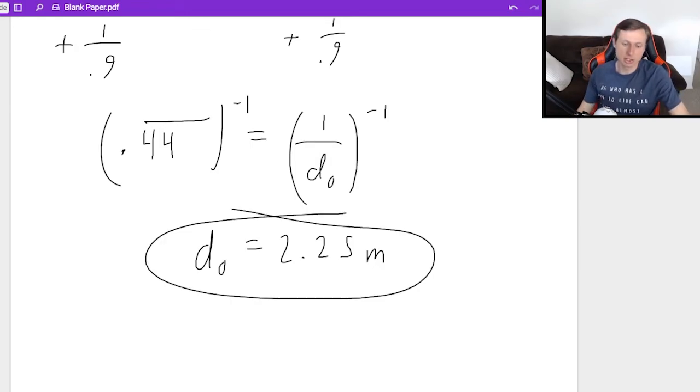You'll notice that's a positive answer. That's because your object should always be placed on the positive side of the mirror. If you ever get a negative answer, that's a problem. It means you need to do your math again to make sure that your image was negative or positive and your focal length was negative or positive, whatever you needed. So that's it for that one. Let's do one more.